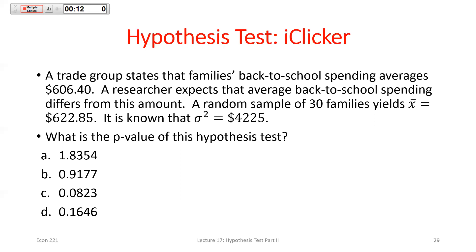For this two-tailed test, set up the same Z-statistic. Once you look up the area from the table — which gives the area to the left — subtract from one to get the right-tail area, then multiply by two, because it would have been equally likely to see something that far from the assumed true mean on the other side. That gives you the full p-value for a two-tailed test.